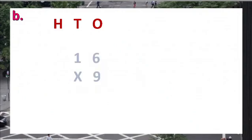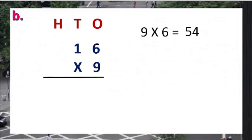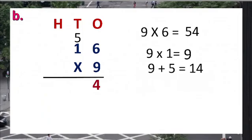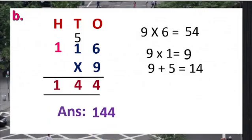Let's look at another example: 16 multiply by 9. So 9 sixes are 54. I will write 4 in the one's column. The 5 carry forward to the 10's column. Next, 9 ones are 9, plus 5, equals 14. I will write 4 in the 10's column. The 1 carry forward to the 100's column. So I will write 1 in the 100's column. We get the product 144. Here, 16 is the multiplicand, 9 is the multiplier, and 144 is the product.